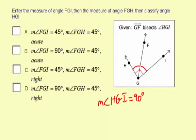Now since ray GF is the bisector, each of the smaller angles are going to be half of the 90 degrees or 45 degrees.